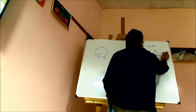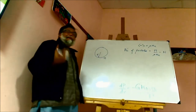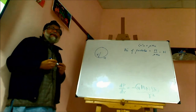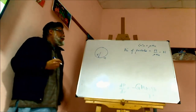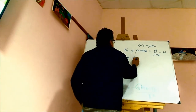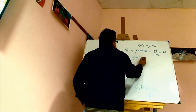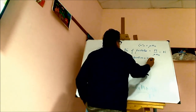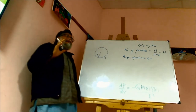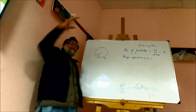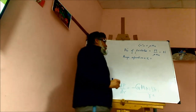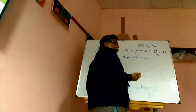So this is the number of particles present in the star. If this is the number of particles, what is the average separation between typical particles? Call this R0. To find R0, imagine that these N particles are uniformly distributed within the sphere.